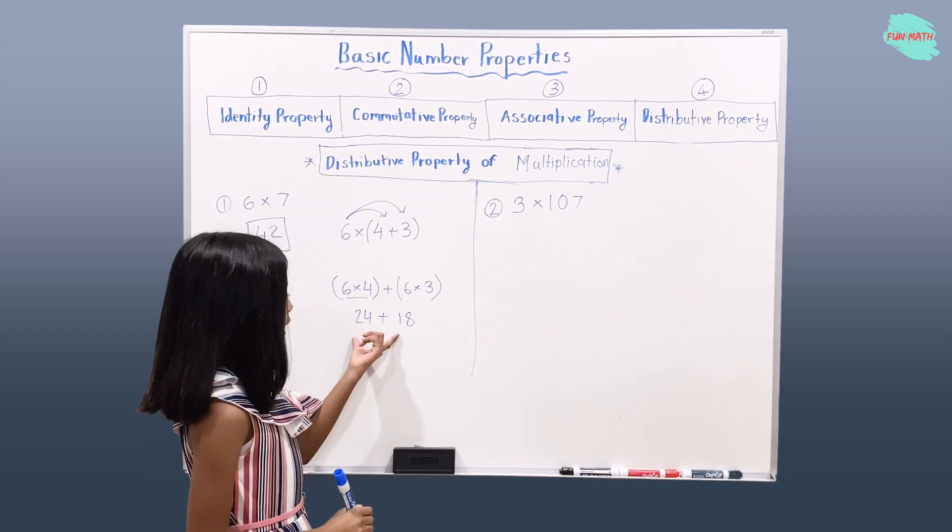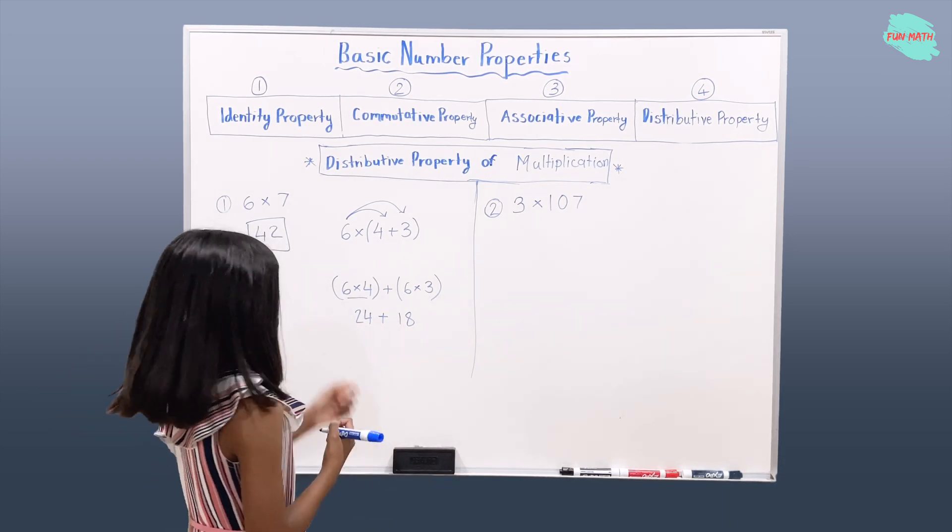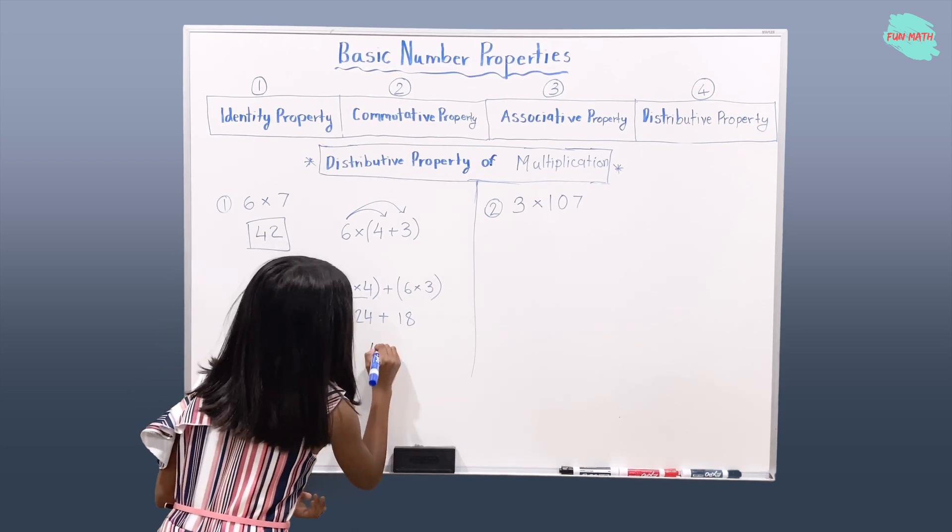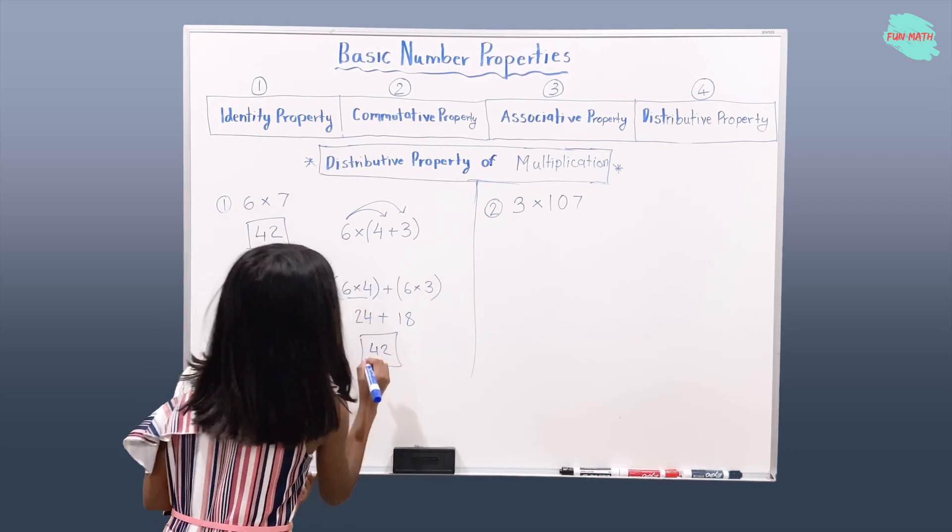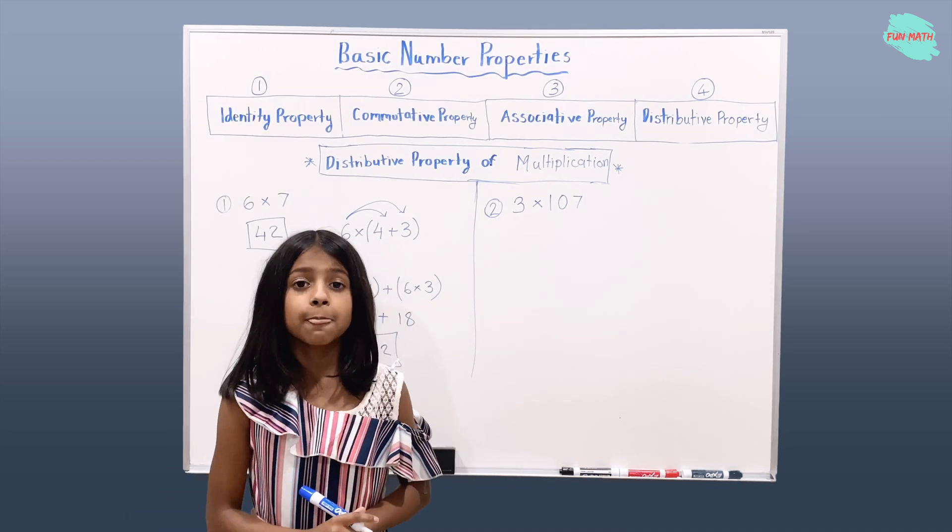When you add 24 and 18, you should get 42. You do get 42. These numbers are the same, and that is the right product.